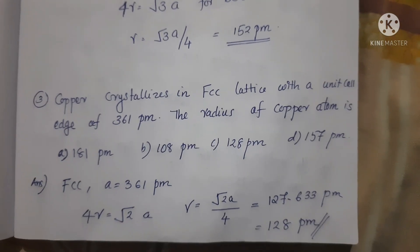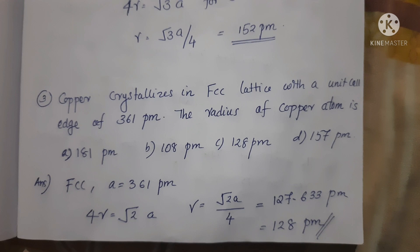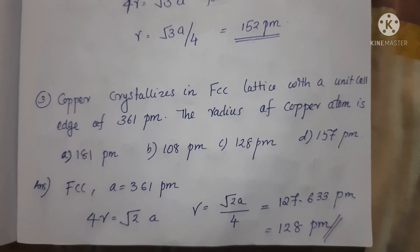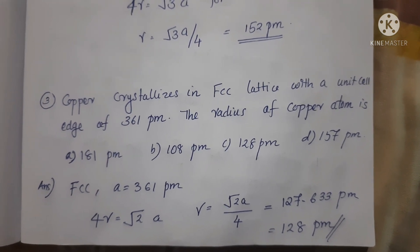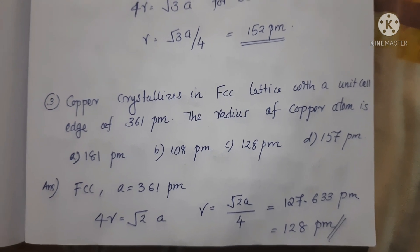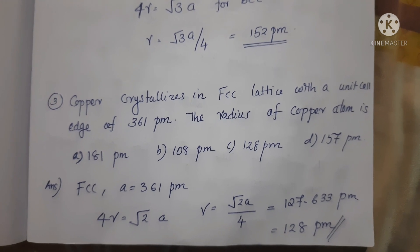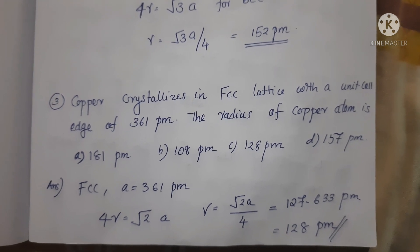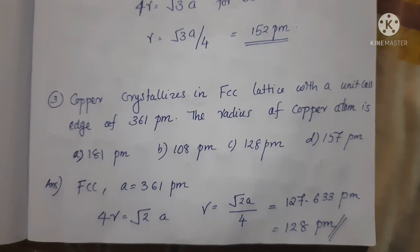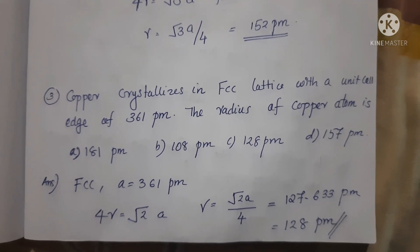Next question: Copper crystallizes in an FCC lattice with a unit cell edge of 361 picometers. What is the radius of the copper atom? Option A: 181 pm, Option B: 108 pm, Option C: 128 pm, Option D: 157 pm.